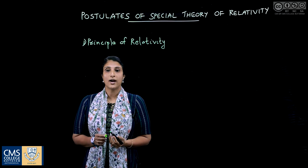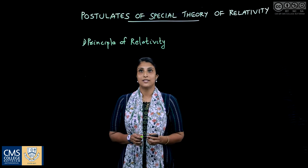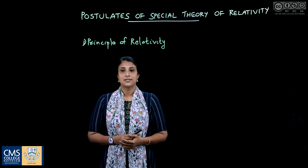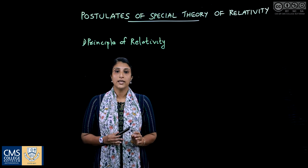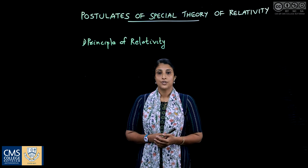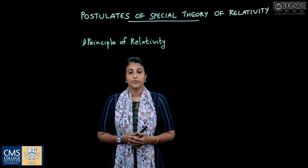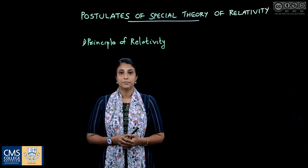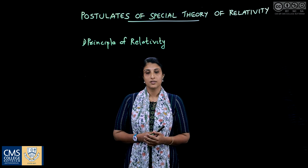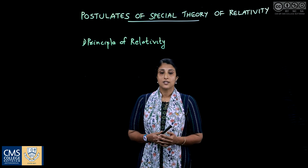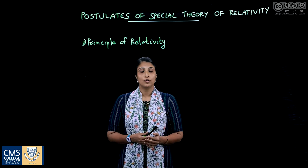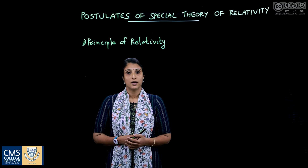The first postulate of Einstein's special theory of relativity is the principle of relativity: the laws of physics are the same in all inertial frames of reference. This postulate follows from the absence of a universal frame of reference — it was the result of the Michelson-Morley experiment. There is no absolute or fixed frame of reference.